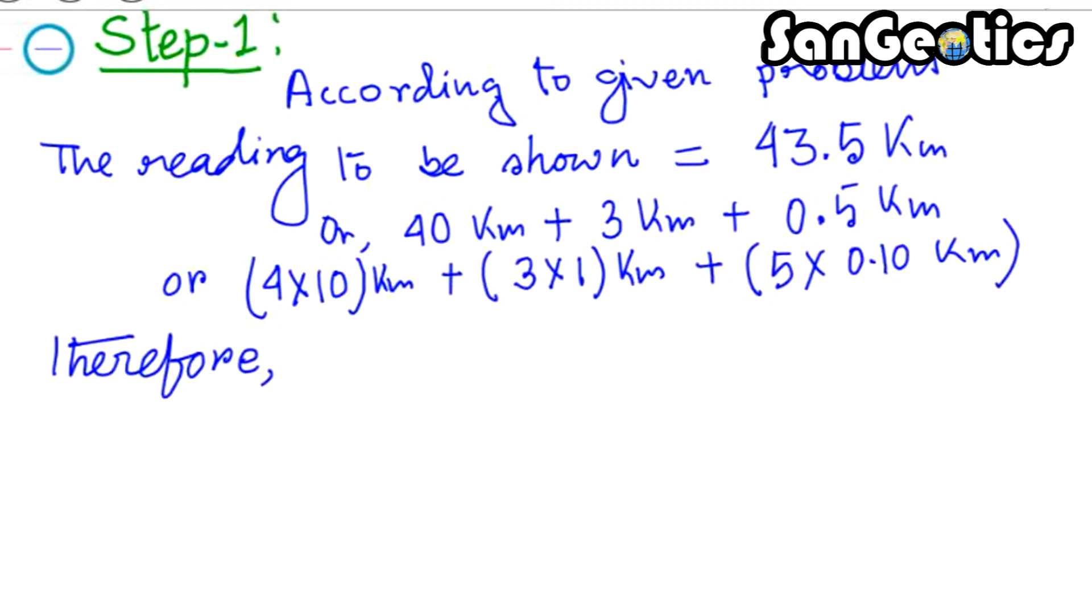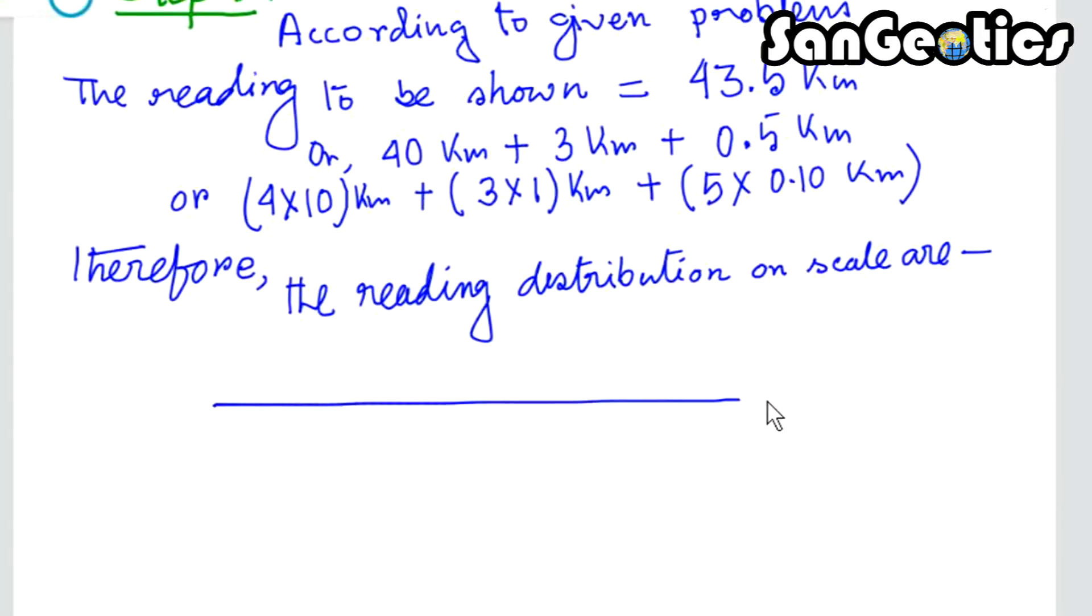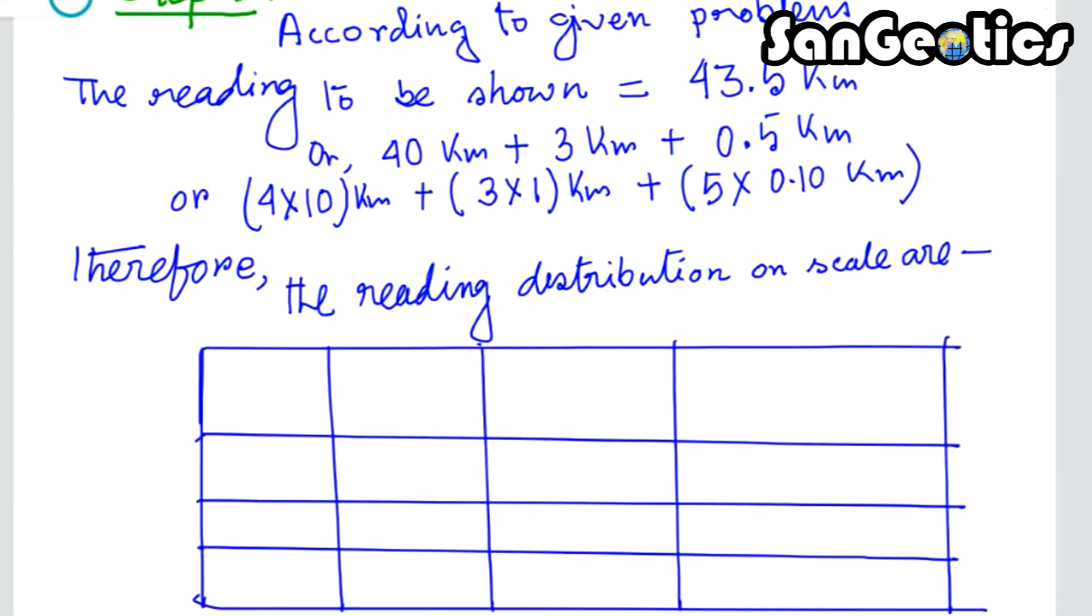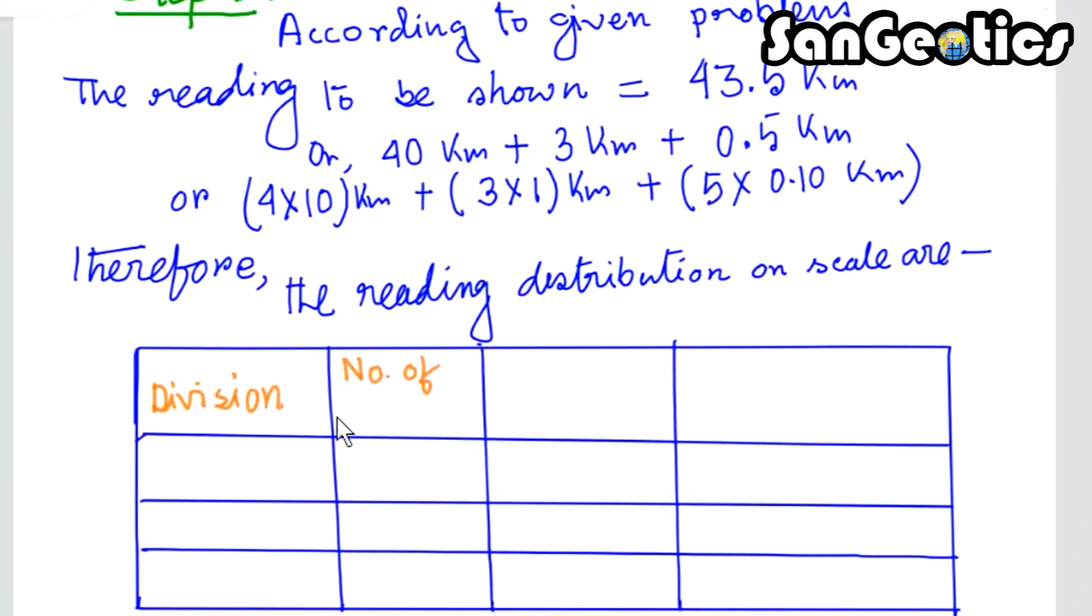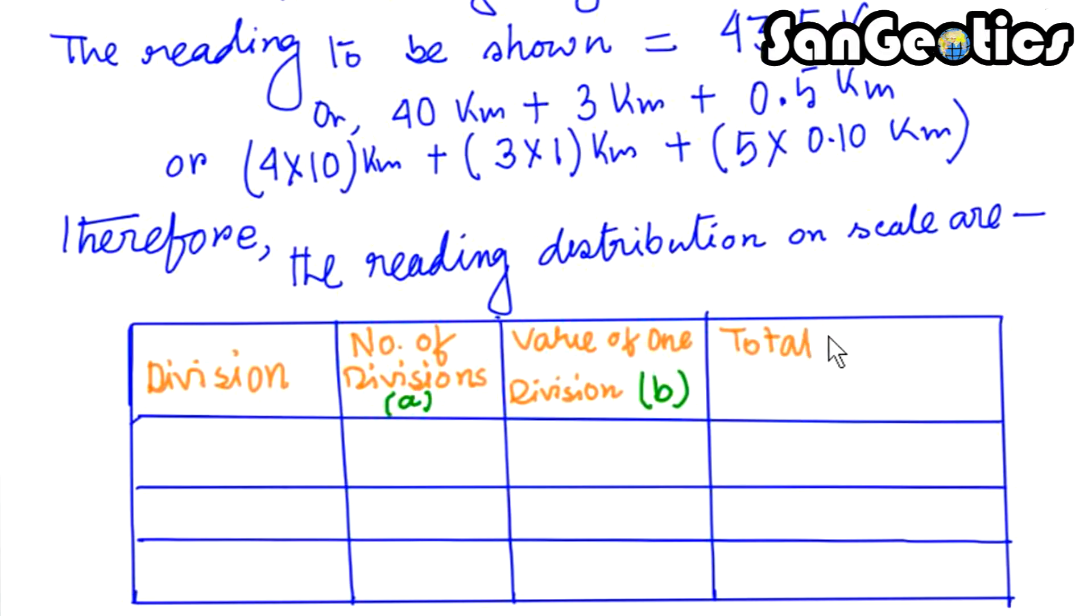Therefore, the reading distribution on scale can be shown in a table. The table head has division, number of divisions A, value of one division B, and total value of divisions A×B. Under the primary division, we write PD means primary division, SD means secondary division, and TD means tertiary division.